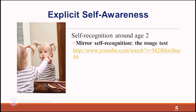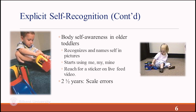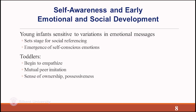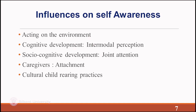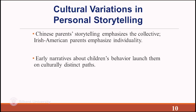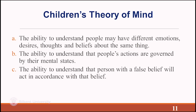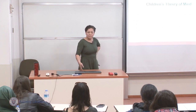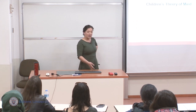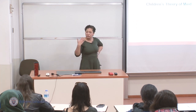To recap: we talked about implicit and explicit self-awareness, the two steps in implicit self-awareness, the rouge task and self-recognition, influences on self-awareness development, and cultural variations in personal storytelling. We talked about how parents were important in helping children develop autobiographical memory — the self as situated in time, continuous, existing before and into the future — and how language helped a lot.